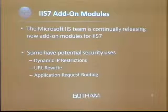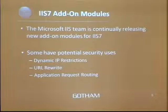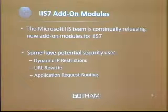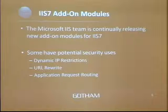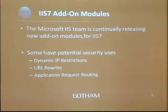The more flexible solution lies in add-on modules released by the Microsoft IIS team. Since IIS7 came out, the IIS team has been releasing a series of add-on modules available for free on IIS.net. Most are not security-related, but a handful have potential security uses — some specifically intended for security and others where you can be creative. Specifically, we'll cover the Dynamic IP Restrictions module, the URL Rewrite module, and the Application Request Routing module.